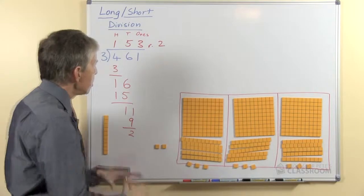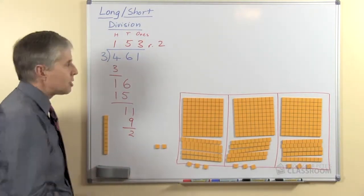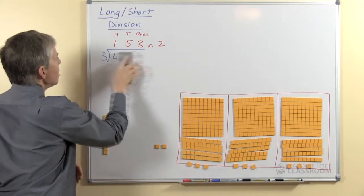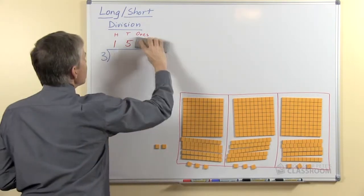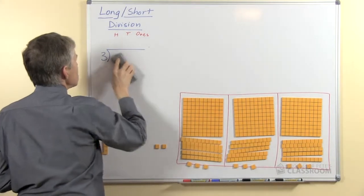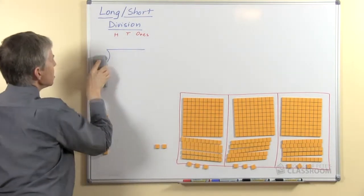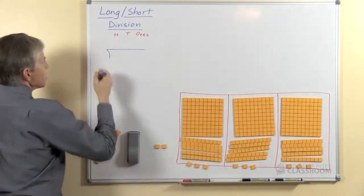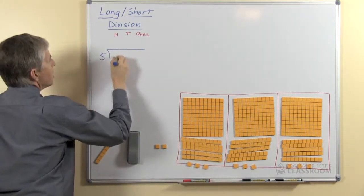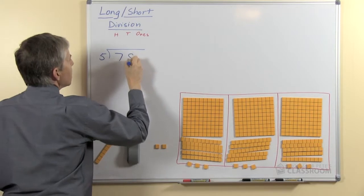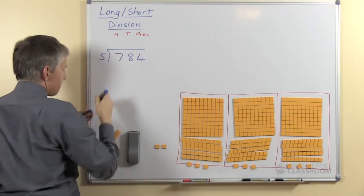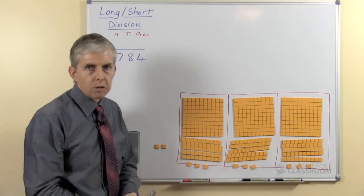So that process, this written process here is called long division where we write all the numbers underneath. So I'm going to show you another question now but we're going to do it using short division. So I'm going to change the numbers and I'll just put a question here, so let's divide by 5 and we'll do 784. And we won't be using the blocks this time.